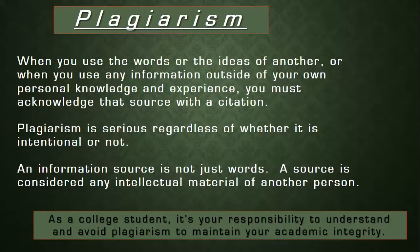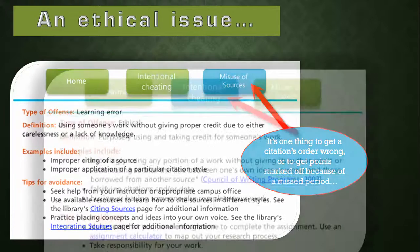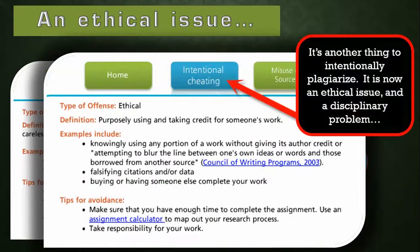As a college student, it's your responsibility to understand and avoid plagiarism to maintain your academic integrity. It's one thing to get a citation order wrong or to get points marked off because you missed a period or forgot to put the dates in parentheses — that's just improperly citing it. But it's another thing to intentionally plagiarize. It is an ethical issue and a major disciplinary problem.